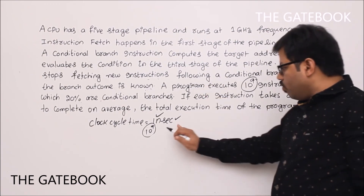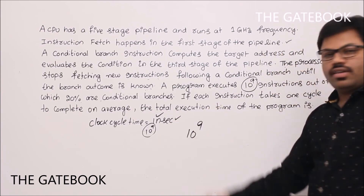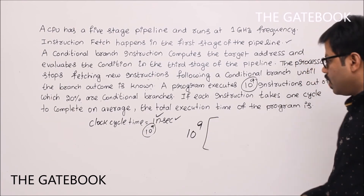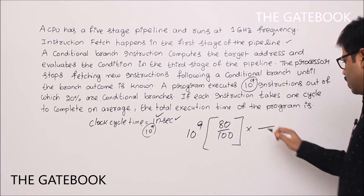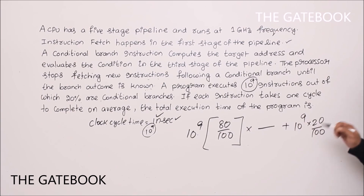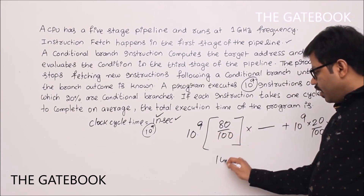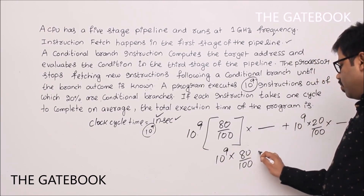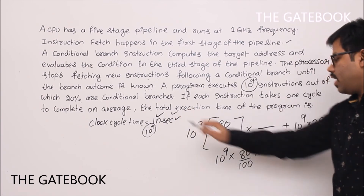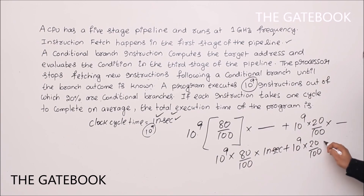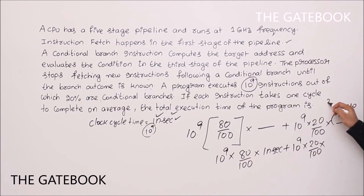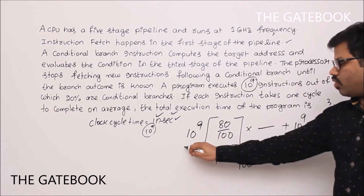A third method: out of 10^9 instructions, 80% (8×10^8) are normal — each takes one nanosecond. The remaining 20% (2×10^8) are branch instructions — each takes three nanoseconds (one cycle plus two penalty). Total time = (8×10^8 × 1 ns) + (2×10^8 × 3 ns) = 0.8 s + 0.6 s = 1.4 seconds. Same answer confirmed.